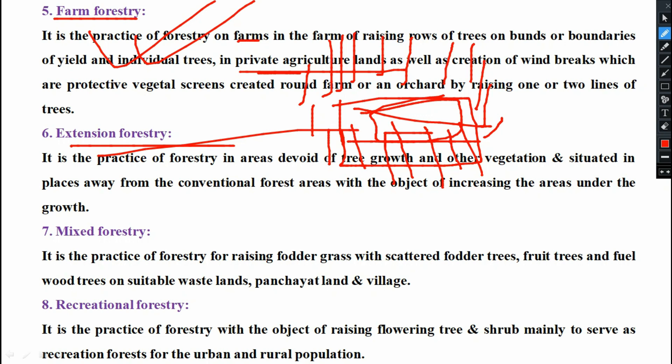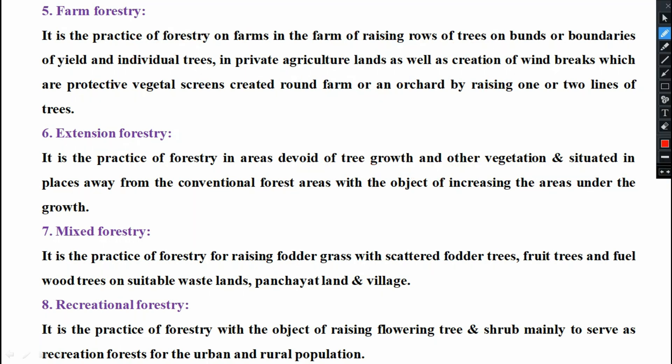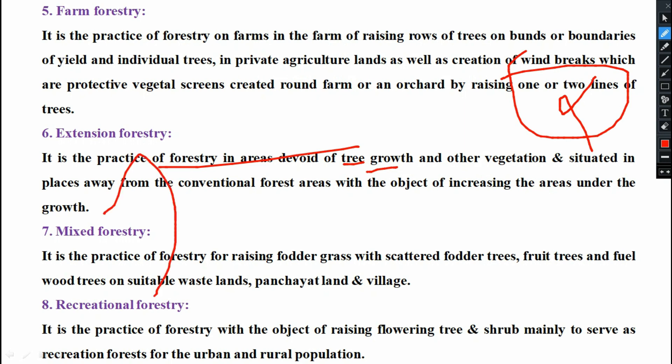Next is extension forestry. It is the practice of forestry in areas devoid of tree growth and other vegetation, situated in places away from the conventional forest areas, with the objective of increasing the areas under tree growth. A place where nothing was there — here, extensively, we will go for recreation of those particular forest areas. That is extension forestry.